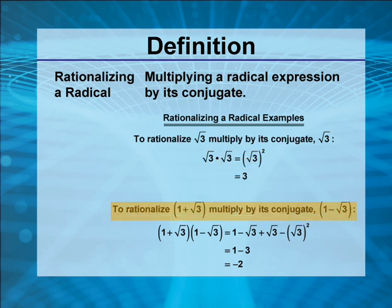To rationalize the expression 1 plus the square root of 3, multiply by its conjugate, 1 minus the square root of 3. We get the expression (1 + √3)(1 - √3).